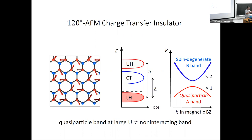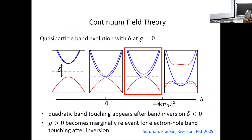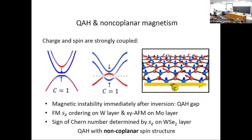Regarding the Mott-to-QAH transition: the transition corresponds to ferromagnetic ordering on the B sites, which polarize in the z direction, while the 120-degree structure on the A sites remains. After the B sites develop ferromagnetic ordering in the z direction, we expect generally that the A sites should also cant. This is done by increasing the electric field. So yes, you can drive to non-trivial states of the A sites as well.